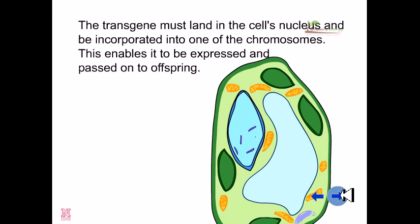The transgene must land in the cell's nucleus and be incorporated into one of the chromosomes. This enables it to be expressed and passed on to the offspring.